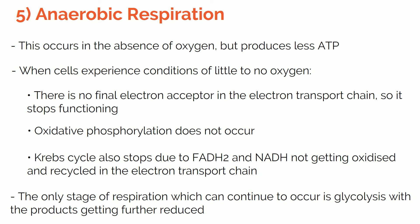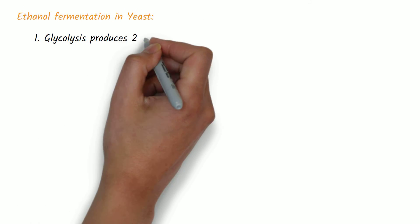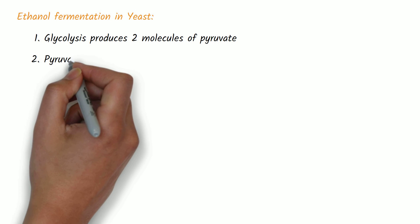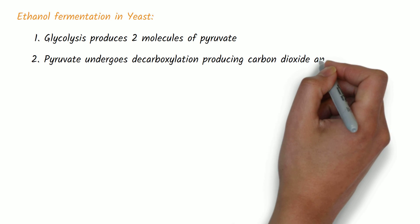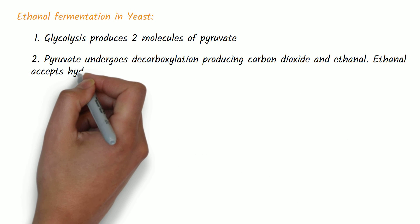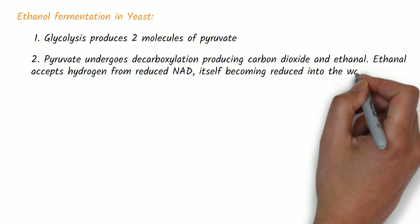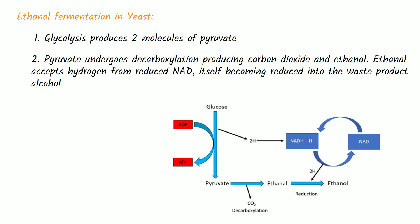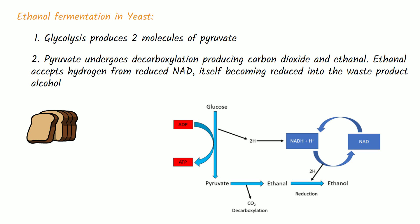In yeast, this is called ethanol fermentation, which occurs in two steps. First, glycolysis produces two molecules of pyruvate. Second, the pyruvate undergoes decarboxylation, producing carbon dioxide and ethanal. Ethanal accepts hydrogen from reduced NAD, itself becoming reduced into the waste product alcohol. This process is helpful to us as this is how bread dough rises and how alcohol is produced.